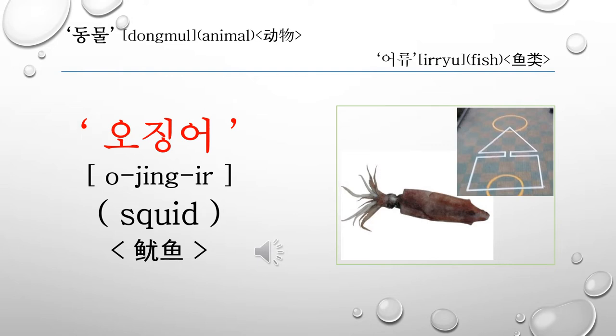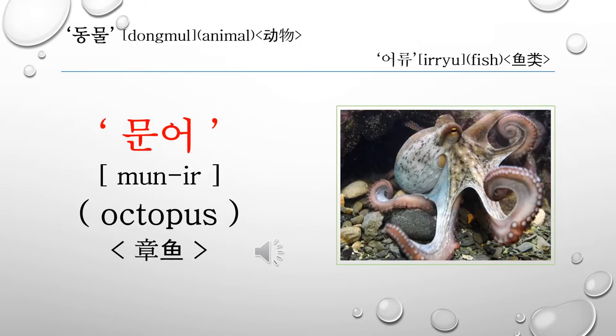This word is 문어. 문어 is called an octopus in English. Let's read it again: 문어.